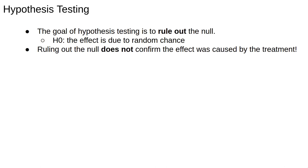The aim of hypothesis testing is therefore to rule out the null hypothesis. If the null is the effect is indistinguishable from random chance, ruling out the null does not confirm that the treatment caused the effect; it only confirms that an effect occurred.